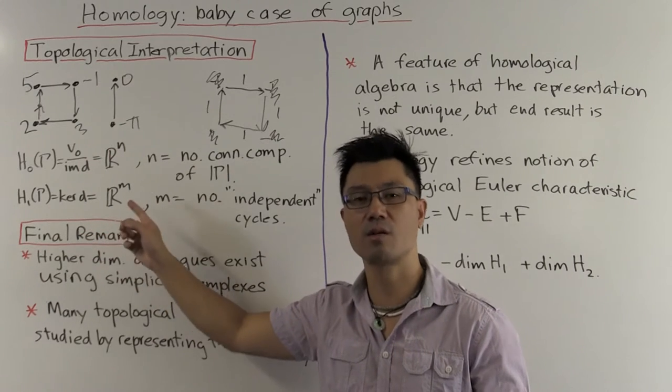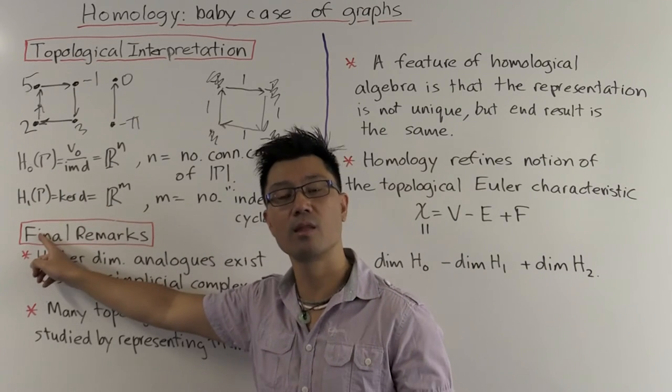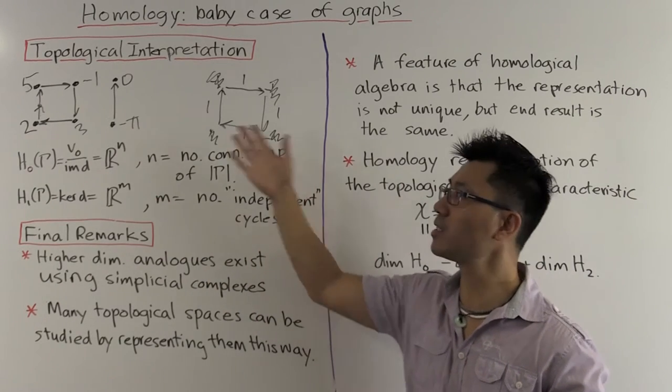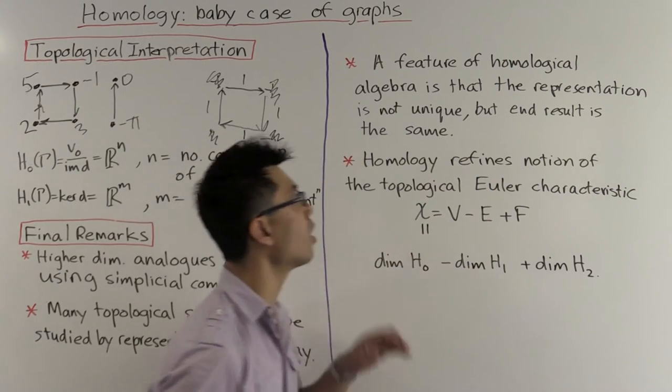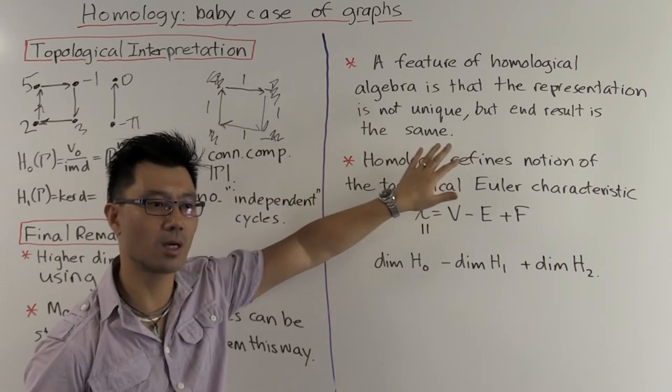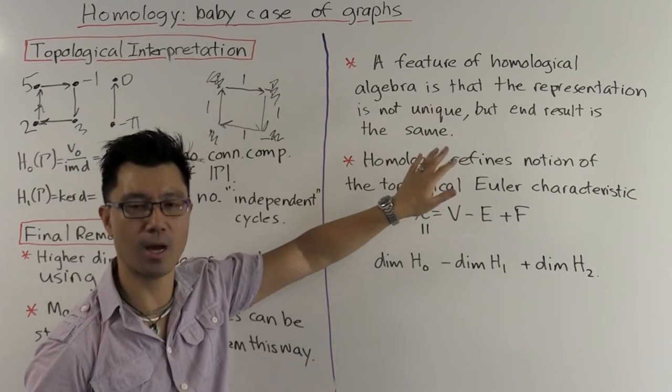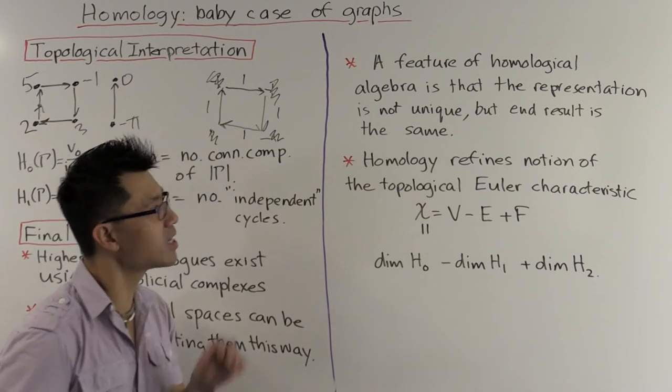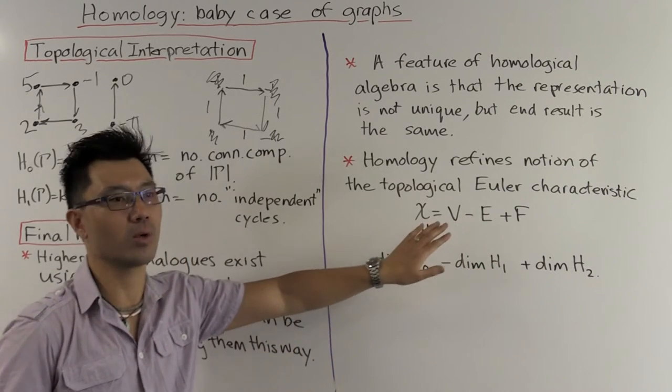If you do that, you change your V0 and your V1. The set of vertices and the set of edges has changed. But miraculously, of course, the h0 and h1, they don't change, because they're topological invariants, and the underlying topological space hasn't changed. So this is a very important feature in homological algebra. Very often you're in a situation, you try to represent an object, which you can do in lots of different ways, but it turns out that it doesn't matter how you represent it, you always get the same answer.